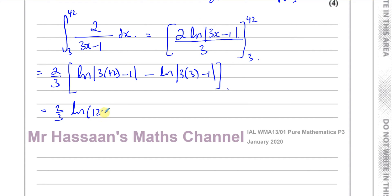Now I know that's positive, so no need for modulus. And this is minus ln of 9 minus 1, which is 8. So we have ln 125 and ln 8, no need for modulus anymore.